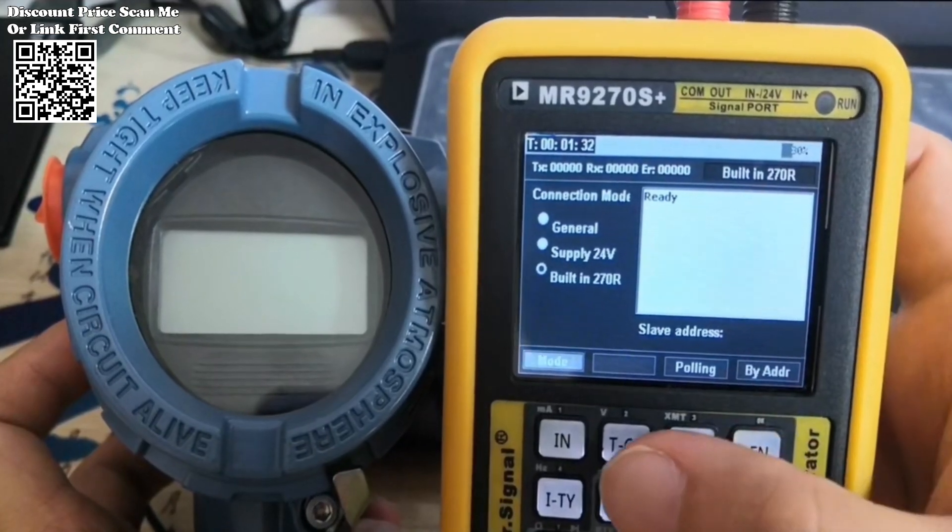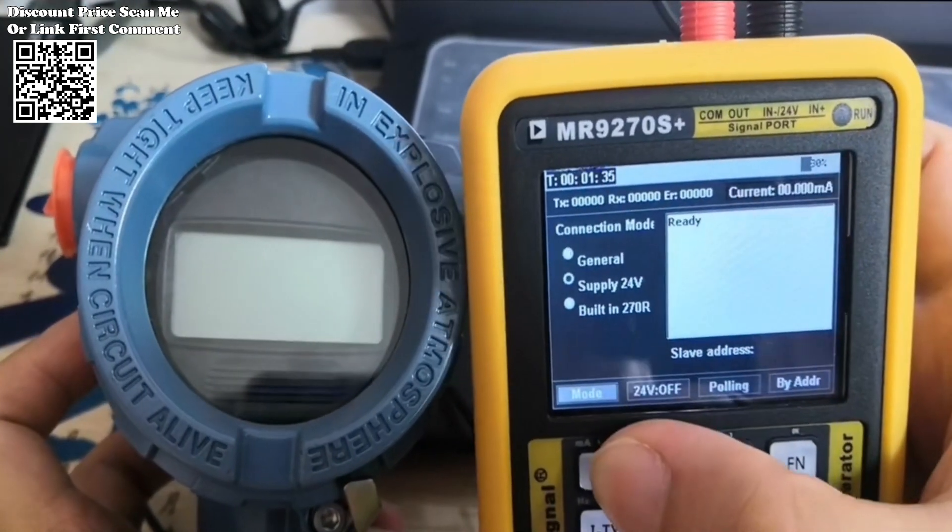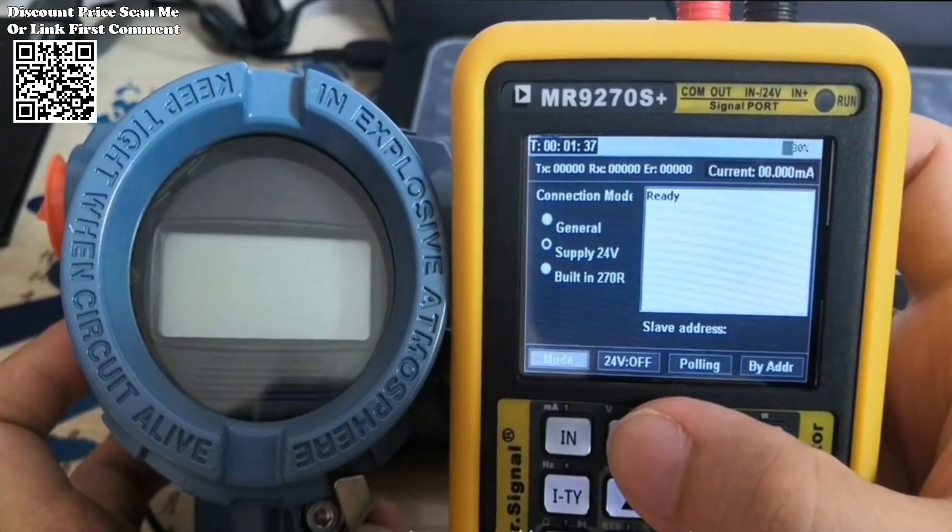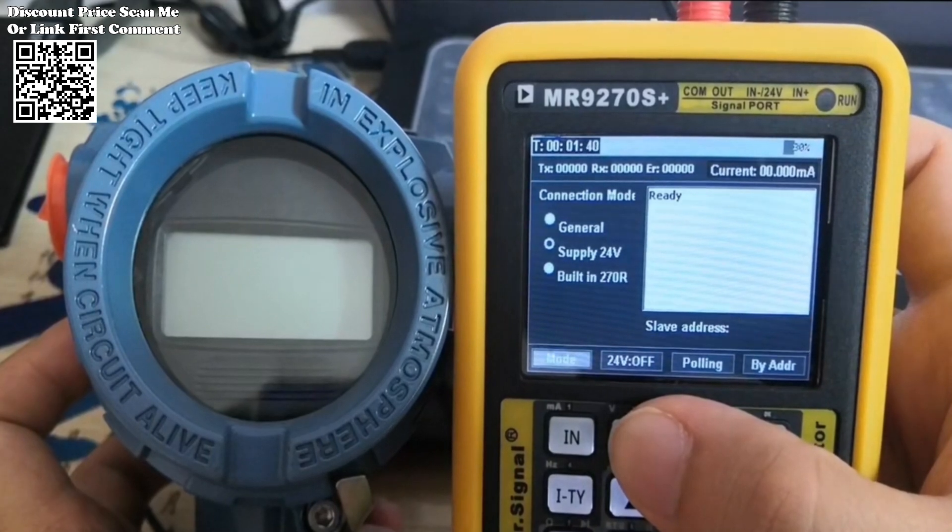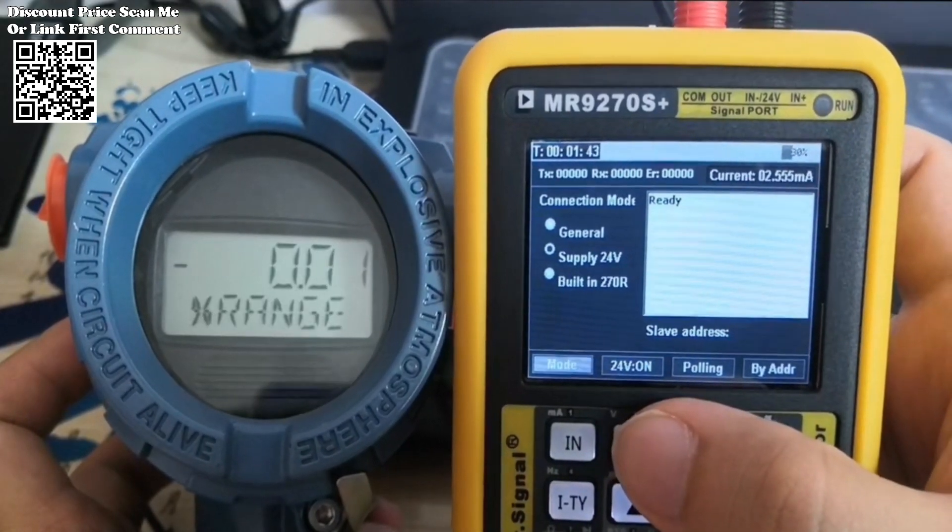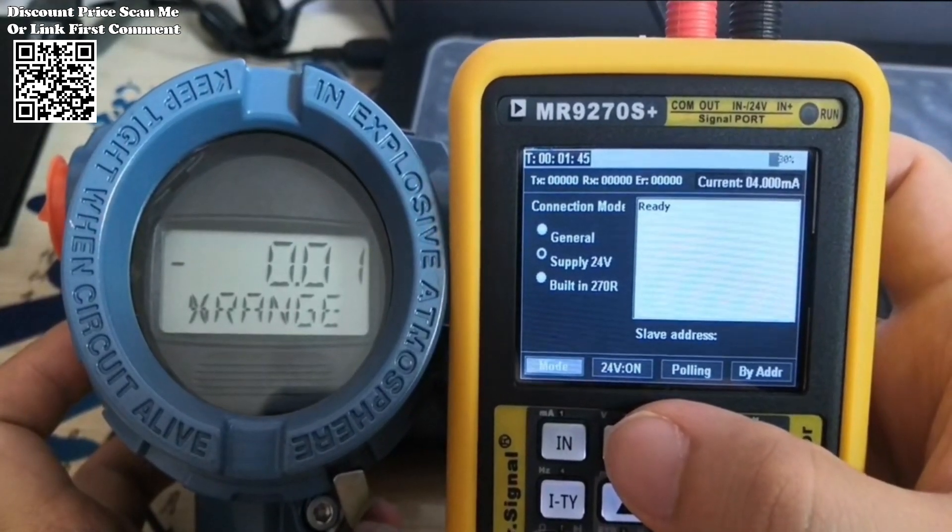Feature 9: Modbus RTU master station. Conduct communication testing, parameter setting, parameter copying, online monitoring, and other operations on slave devices with RS485 Modbus interface.